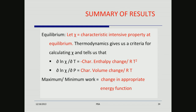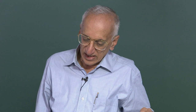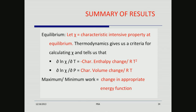The thermodynamic theory is so beautiful and complete that it gives results of the same form in many contexts. If χ is a characteristic intensive property at equilibrium, thermodynamics will tell you how to calculate χ from one of the criteria already discussed. It will also tell you that d(ln χ)/dT = −(characteristic enthalpy change)/RT², and d(ln χ)/dP gives a characteristic volume change divided by RT. The maximum or minimum work will be the change in the appropriate energy function. This is the summary of results in thermodynamics — they are always of the same form.